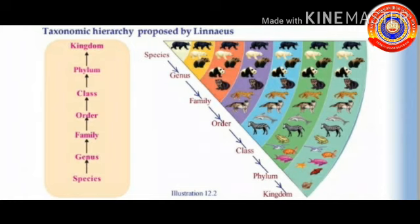Fifth is class — various orders constitute the class. Sixth is phylum — related classes join to form the phylum. Seventh is kingdom — all phyla constitute the kingdom, which is the highest level.